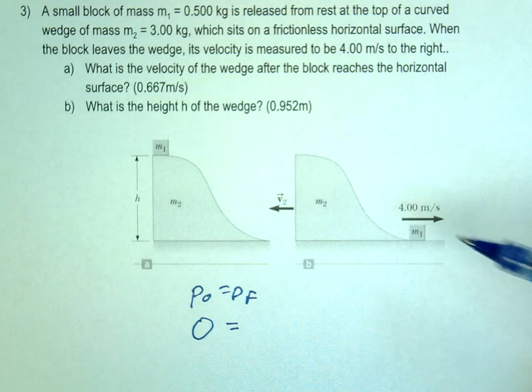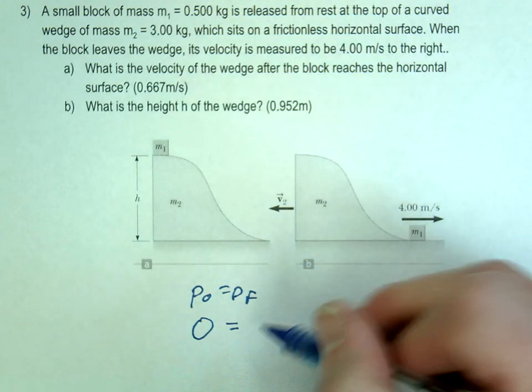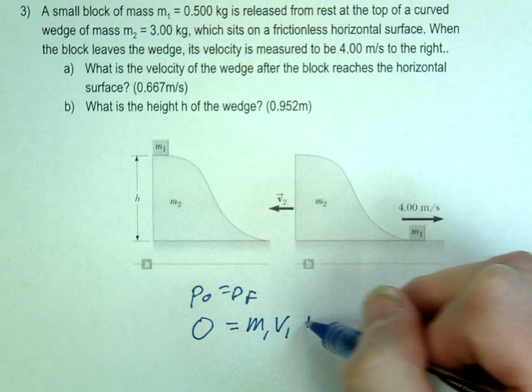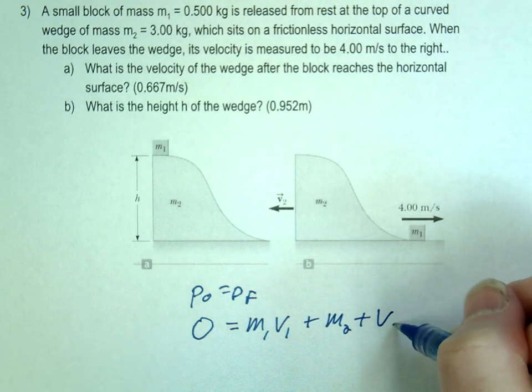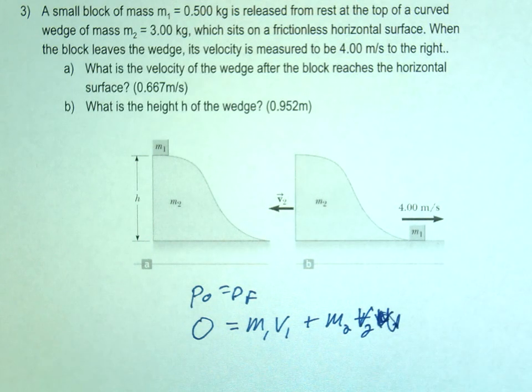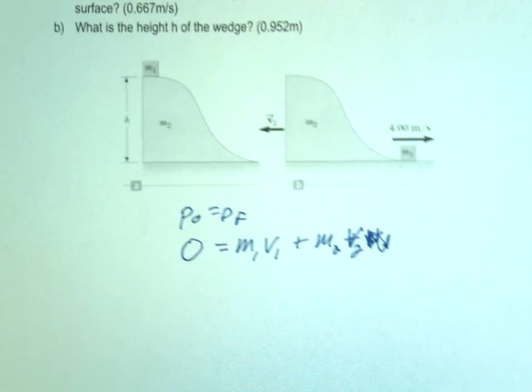And then you have two momentums. One going one way, the other one going the other way. You can put m1v1 minus if you want. I'm just going to leave it as plus and then let the math figure it out for me. So you have m1v1 plus m2v2, and then you just go ahead and solve it.